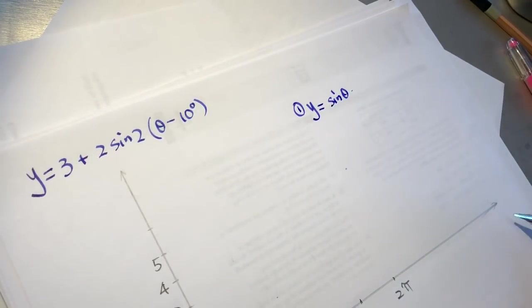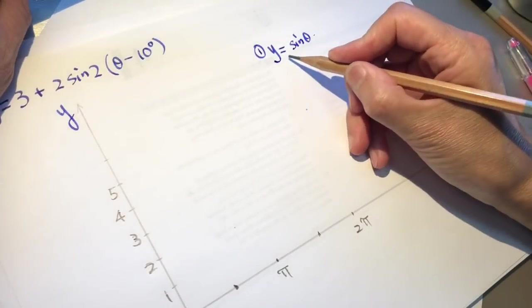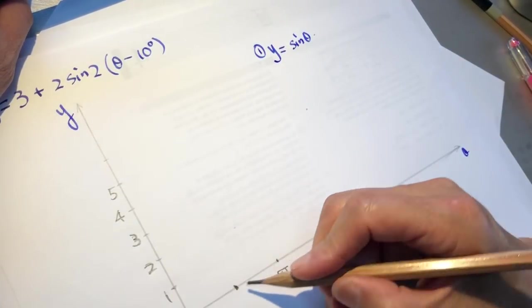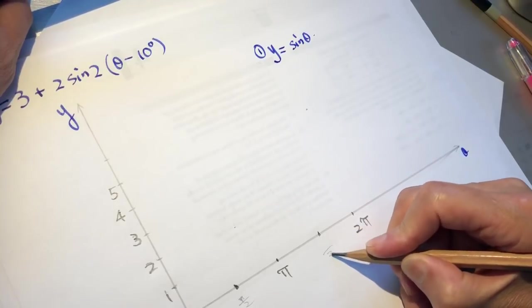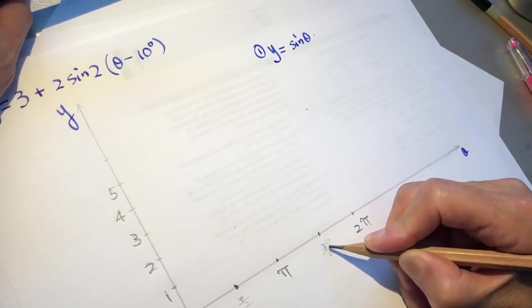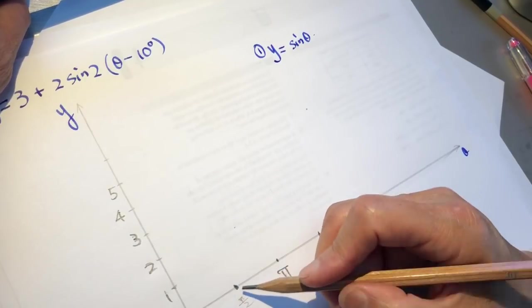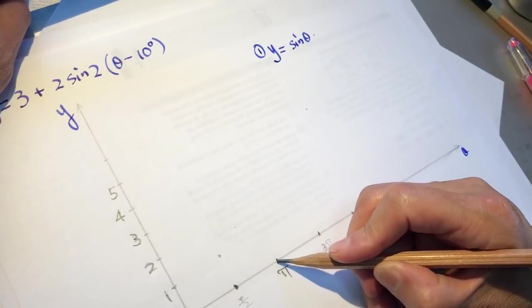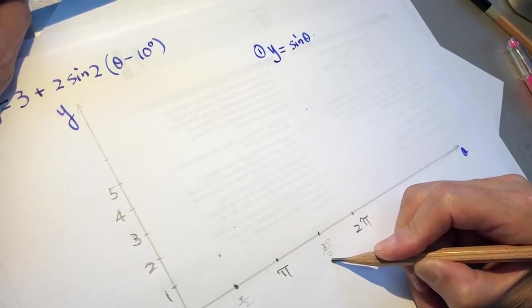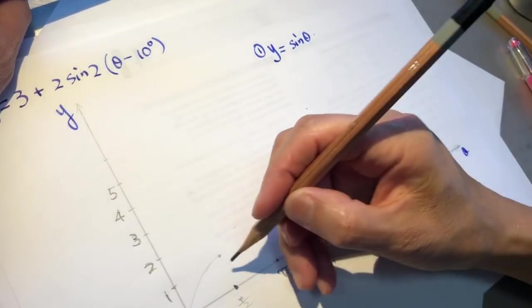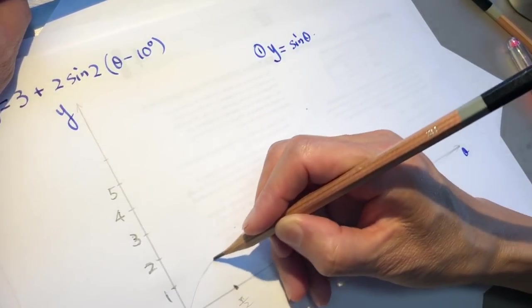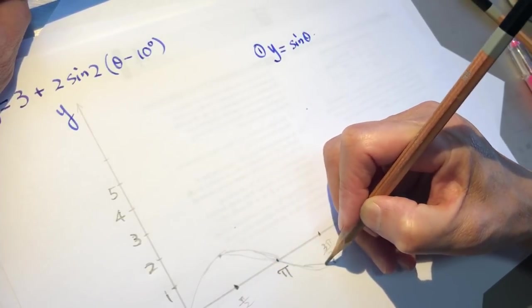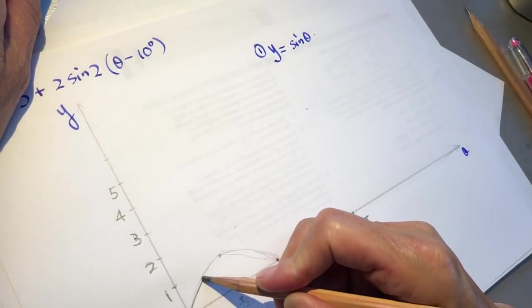The most basic form is y equals sine theta. This is theta on the x-axis and y on the y-axis. The sine rotation starts from zero: when theta is half pi, y is one; at pi, y is zero; at three pi over two, y is negative one. This is the basic form — graph one, y equals sine theta.